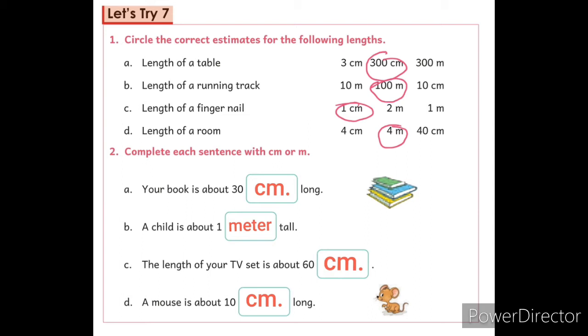Question number B: A child is about 1 dash tall. Bachchi ki lambai lag-bag kitni hogi? The answer is 1 m.